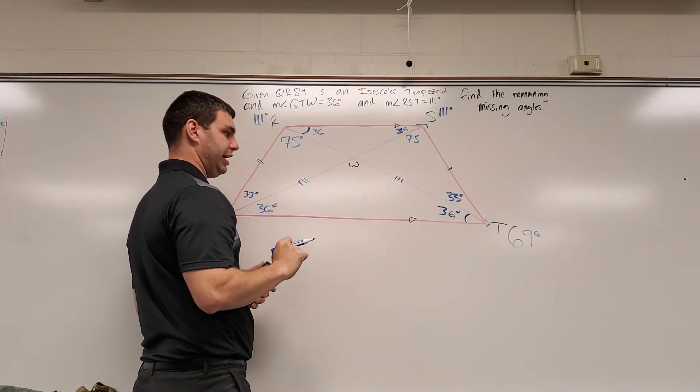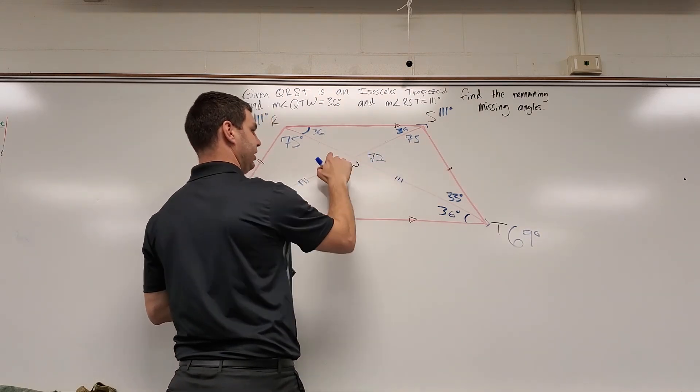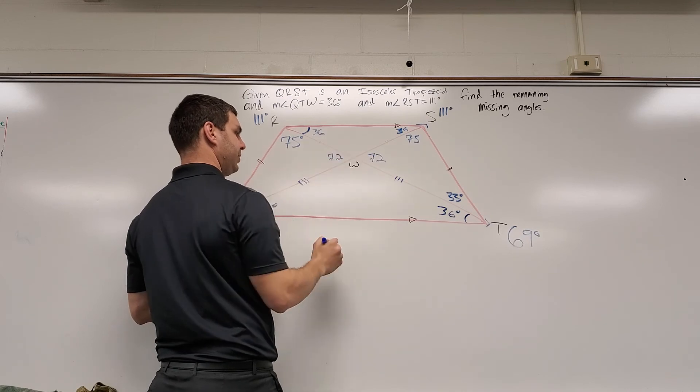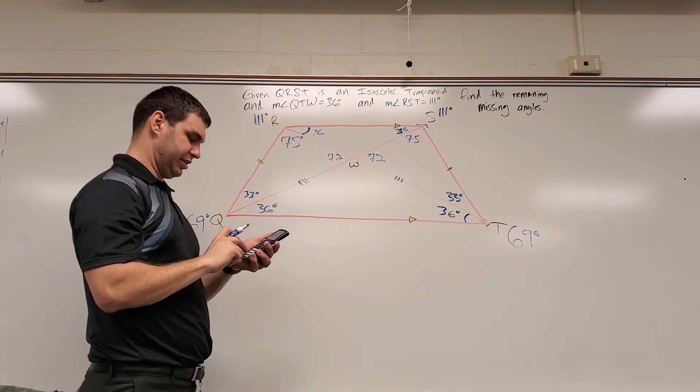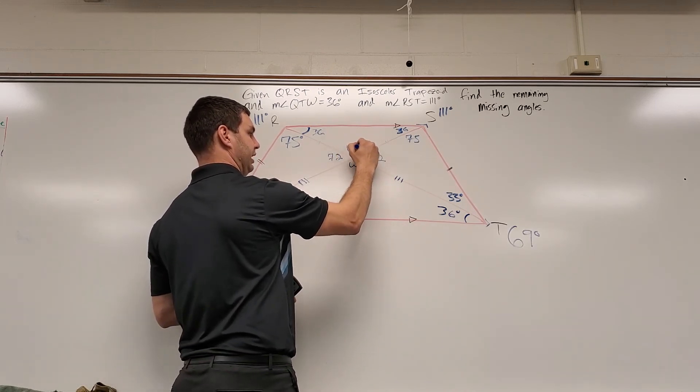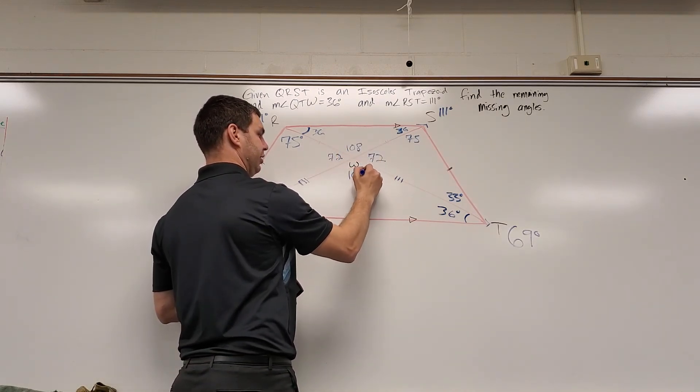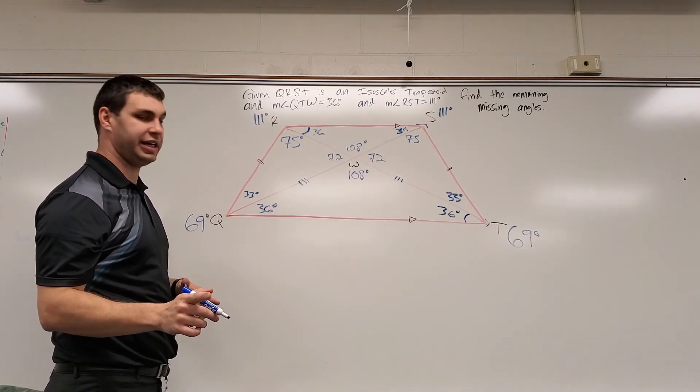All right, so if I take 180 minus 108, that should be 72. These are vertical angles, so this would also be 72 over here. And then you can do 180 minus 72, and that will give you both of these, which is also 108. It's 108 and 108. And now I think we have all the angles accounted for.